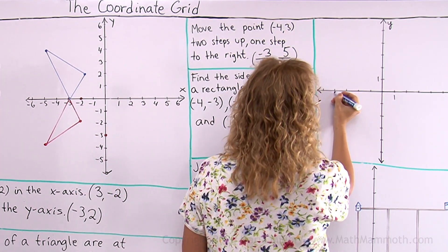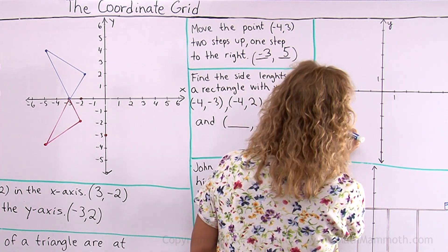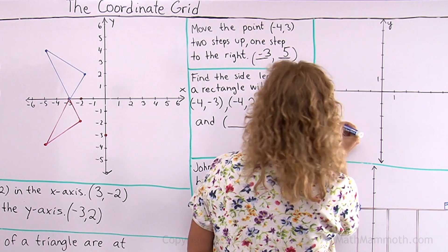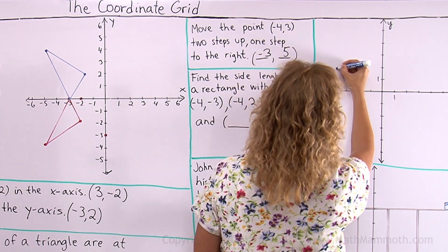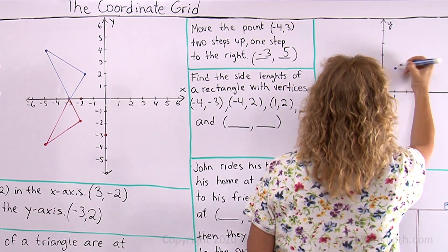First point is minus four minus three. One, two, three, four and then three, no, three down. Three down over here. Then minus four and two up. Then one and two.